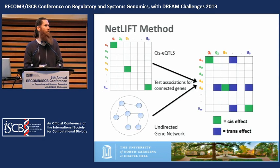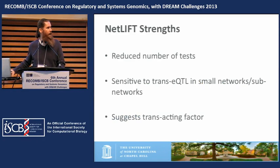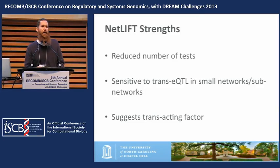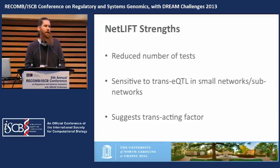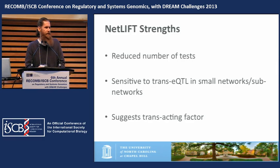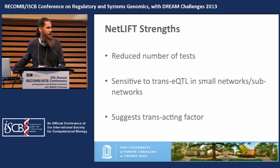In this way we can somewhat get around the problem of multiple hypothesis testing and the power problems associated with that. NetLift's big motivation was to reduce the number of tests being performed. Unlike hotspot methods, you can still detect trans EQTLs that are working on small subnetworks without requiring a large number of co-regulated genes. By combining it with the CIS EQTL association, the CIS gene then becomes your potential trans-acting factor that mediates the relationship between the QTL and the trans gene.